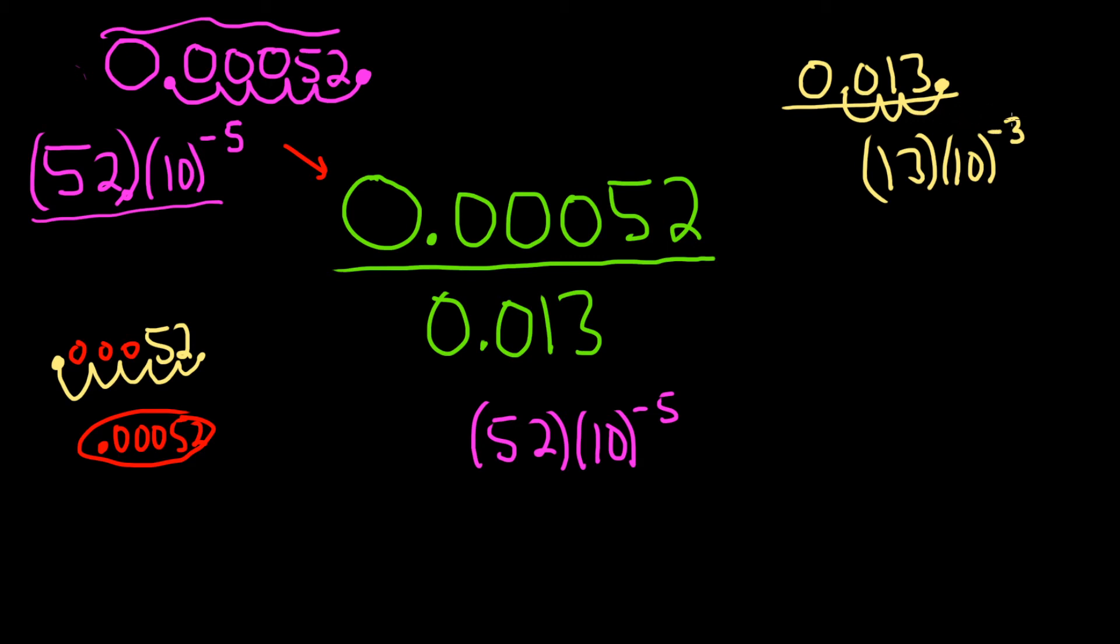We want to go backwards. So if we use this, we'll get this. And you can check it. If you have 13 times 10 to the negative 3, that means you take the 13, which is 13.0, and you go three places to the left: 1, 2, 3.